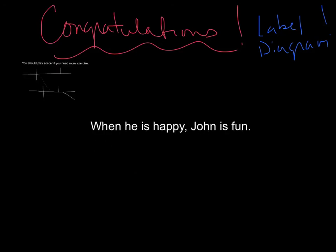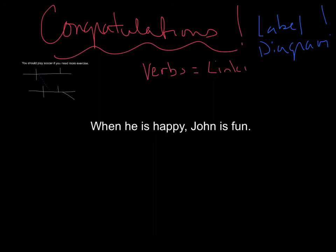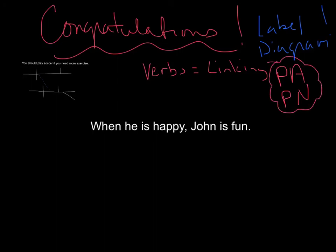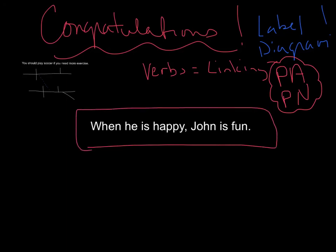Congratulations — now you're ready for the next one. Take this sentence and go ahead and label and then diagram it. I'm not going to give you any help except for one thing: both verbs that you're going to find will equal linking. So you're going to be looking for either a predicate adjective or a predicate nominative. That's the only bit of help I'm going to give you. Go ahead and label and diagram that sentence and bring it to me — then you're ready for your assignment. Great job.